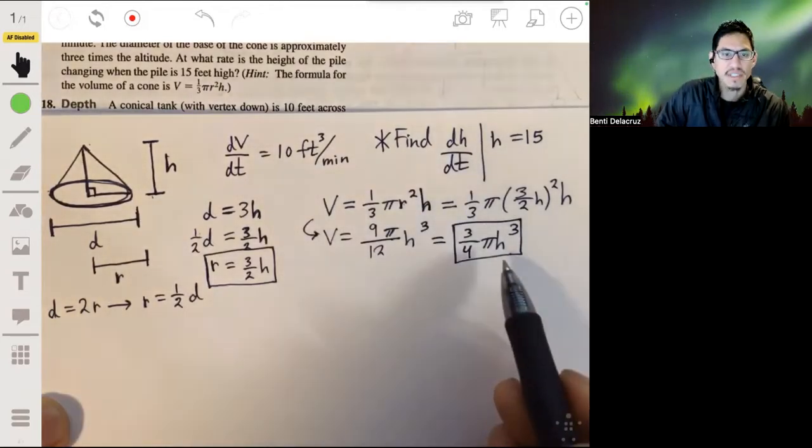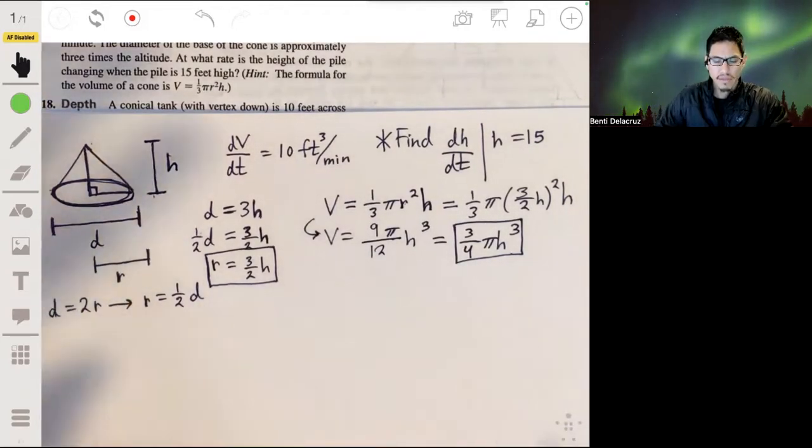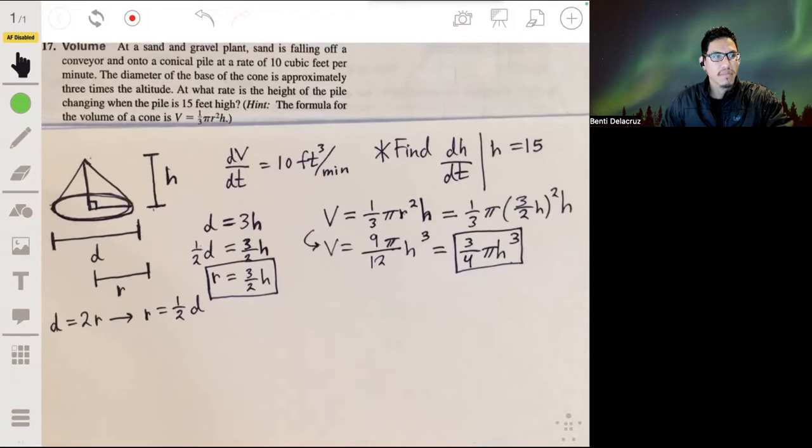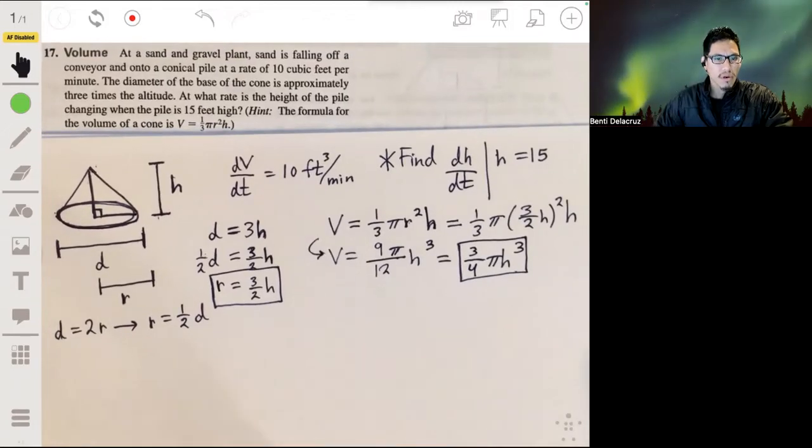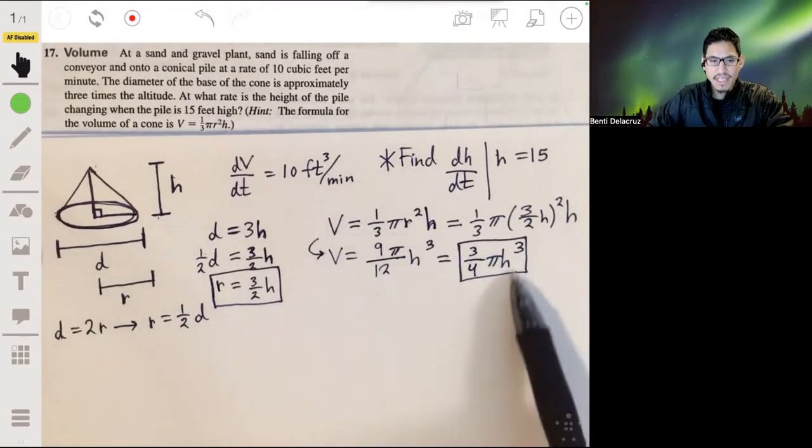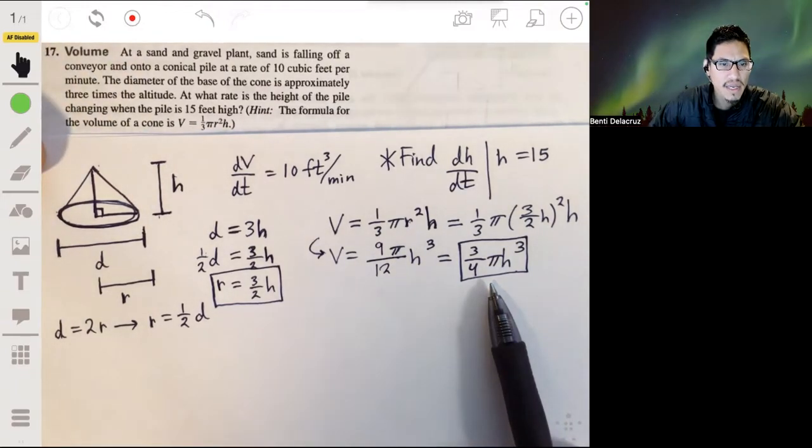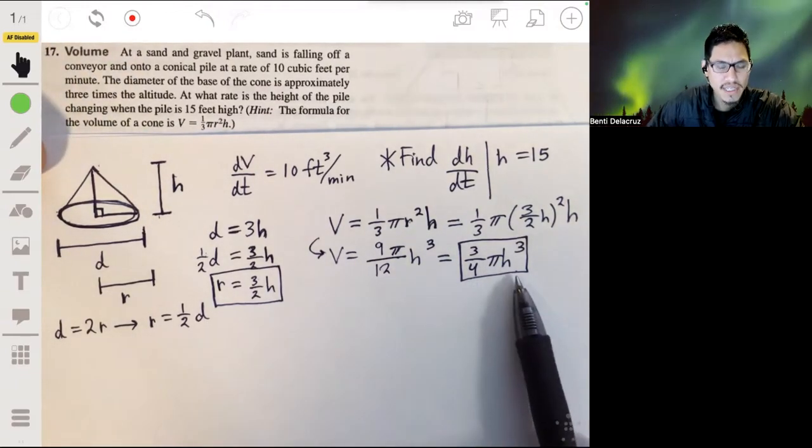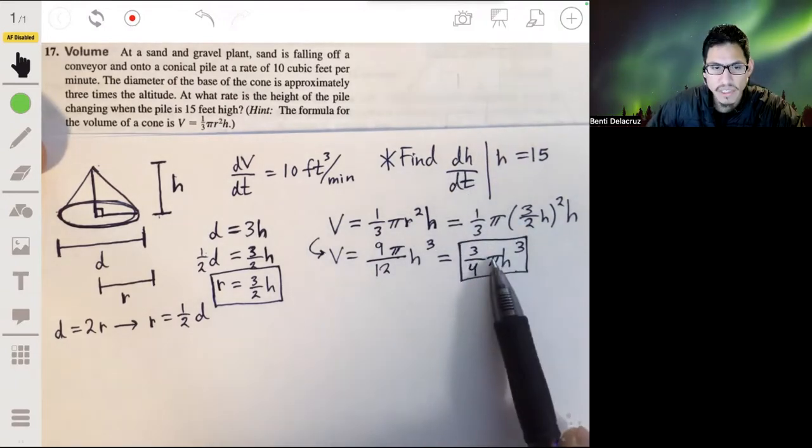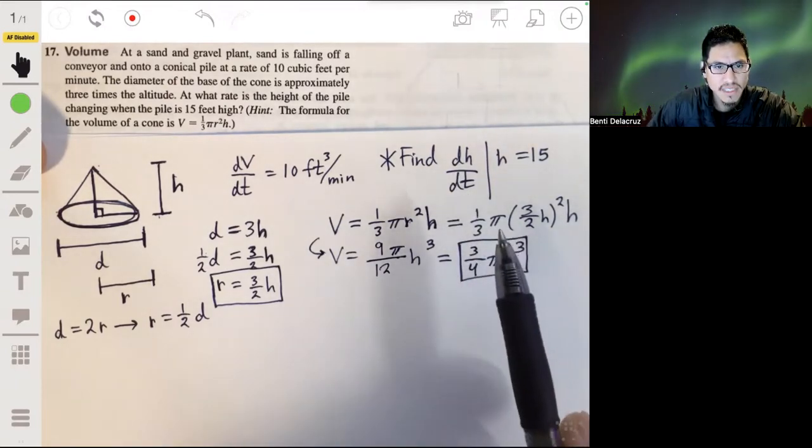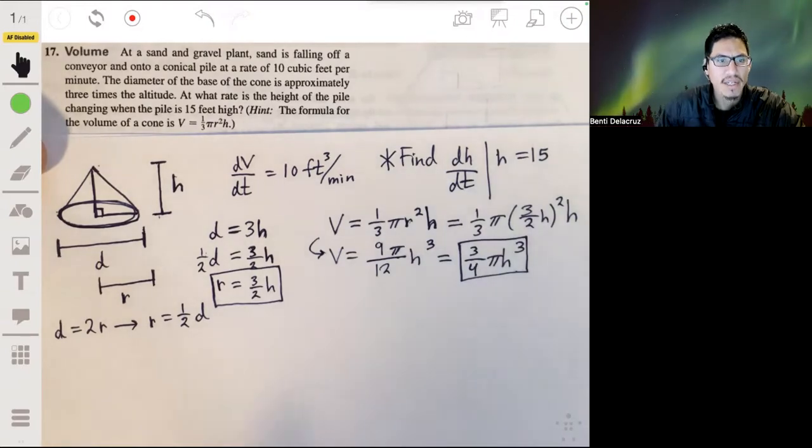Now we have a formula for volume just in terms of height. This is going to make our problem a little bit easier to work with. Now, what we want to do here is differentiate this with respect to time, and then we're going to get dh/dt in this equation, and then we solve for dh/dt, and then we get our answer.